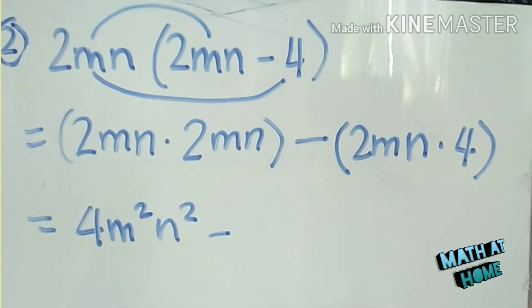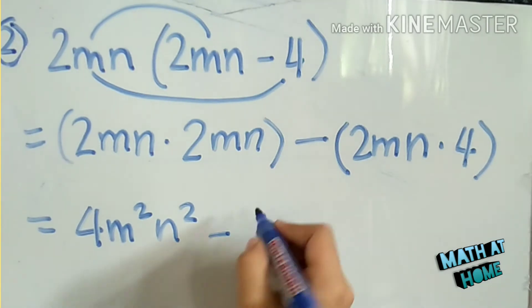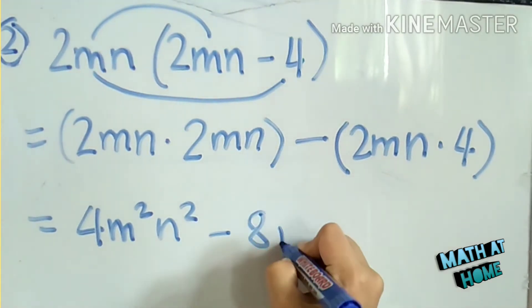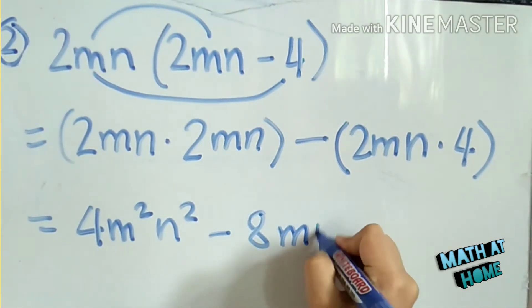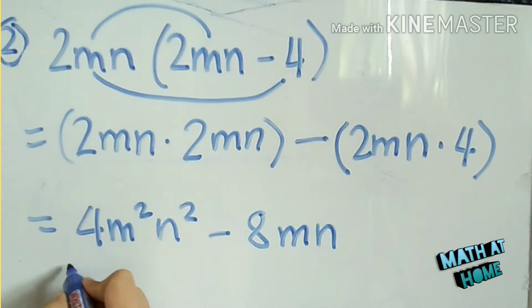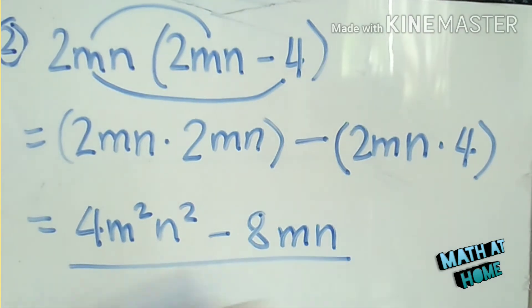Minus — what is 2mn times 4? That is 8mn. So this is now the product: 4m squared n squared minus 8mn.